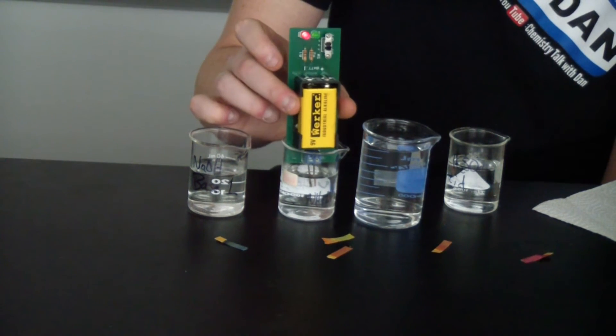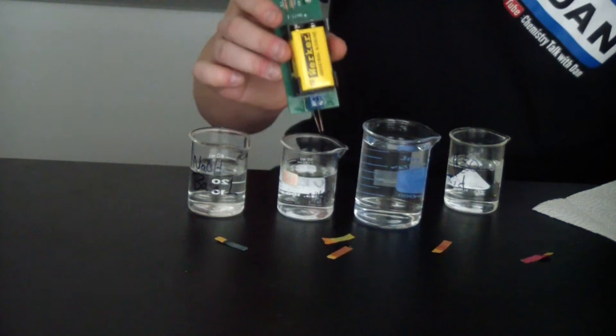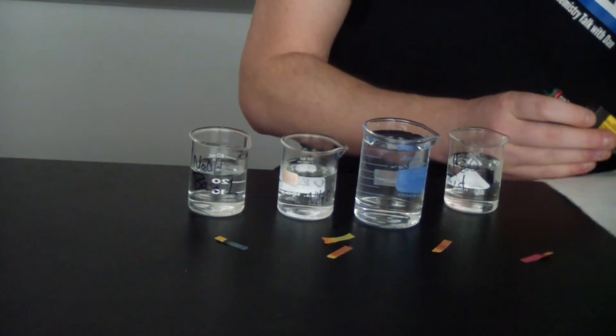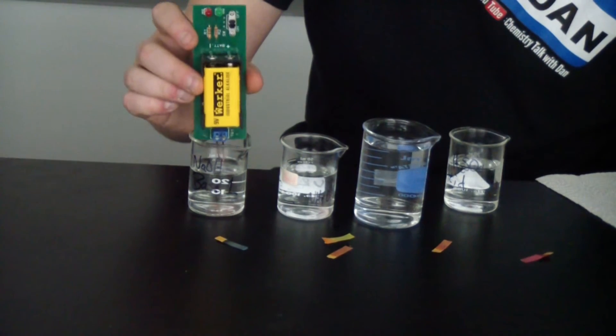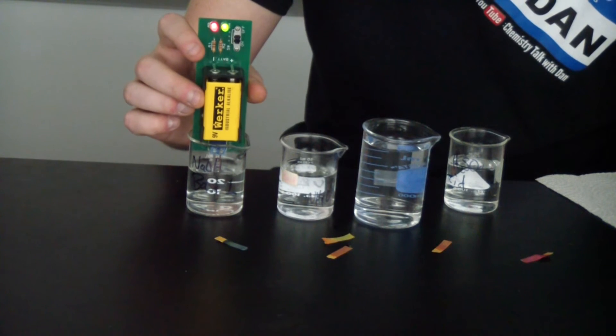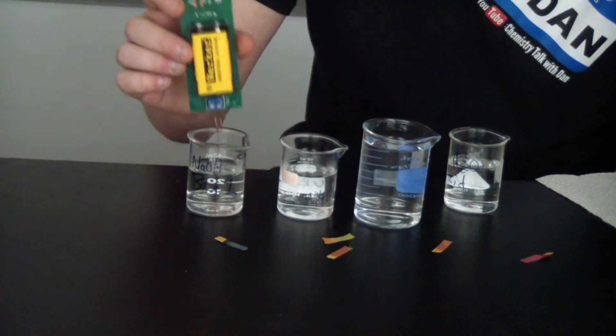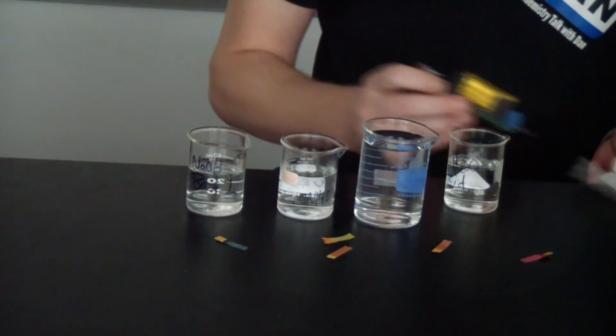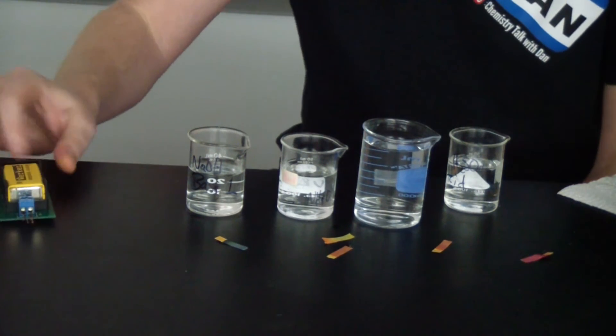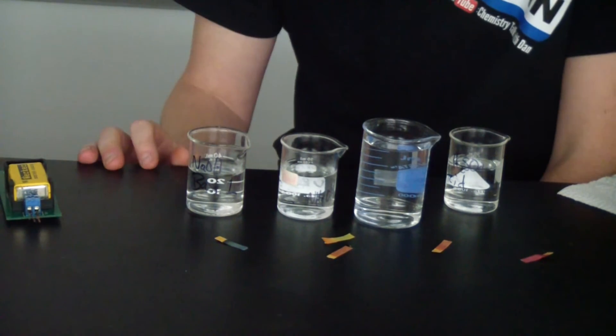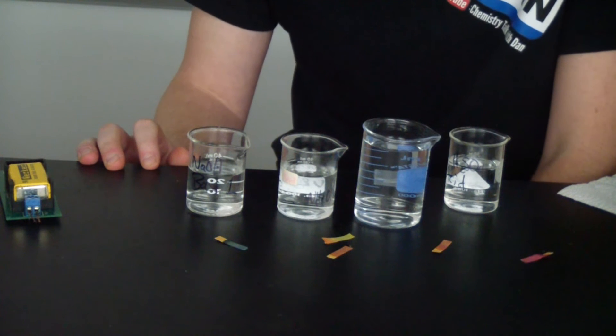The ammonium hydroxide, pretty much the same results. Not a good conductor. And then the sodium hydroxide, lights are clearly coming on. That is a good, strong conductor right there. So what does this tell us? Well, it tells us that electrical conductivity is a much better indicator of strength.